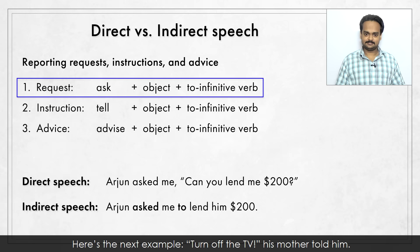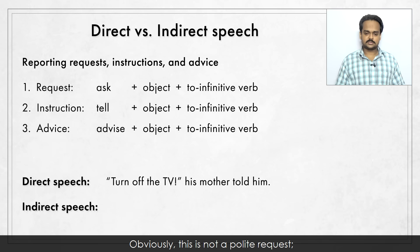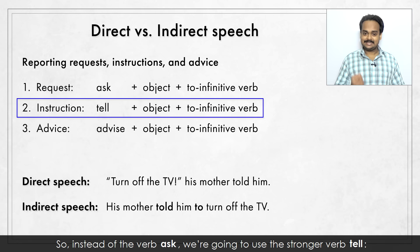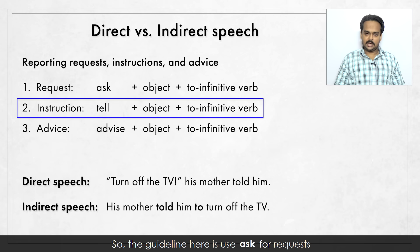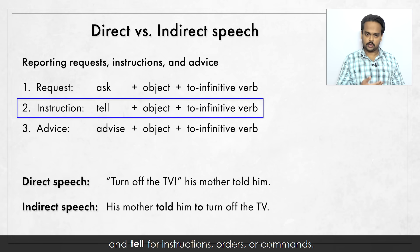Here's the next example: "Turn off the TV," his mother told him. Obviously, this is not a polite request – it's an instruction, in fact a command. So instead of the verb "ask", we're going to use the stronger verb "tell". His mother told him to turn off the TV. The guideline here is: use "ask" for requests and "tell" for instructions, orders or commands. If a request or command is negative, you just add "not" before "to".